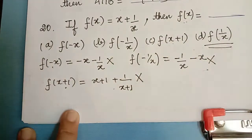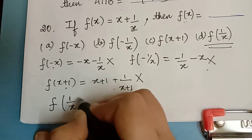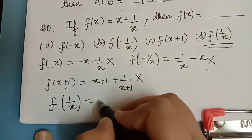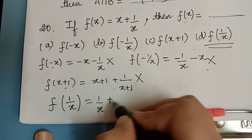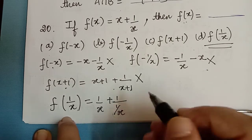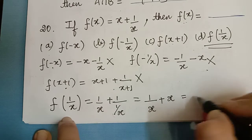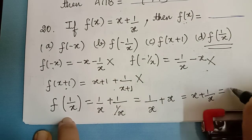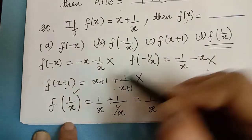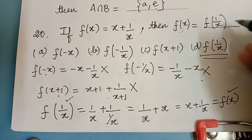For the last option, we check f(1/x). Substituting 1/x in place of x, we get 1/x + 1/(1/x). Now 1/(1/x) = x, so it becomes 1/x + x, which equals x + 1/x, which is equal to f(x). Therefore f(x) = f(1/x), and this is the correct answer.